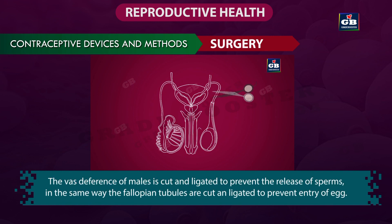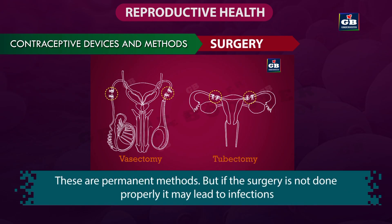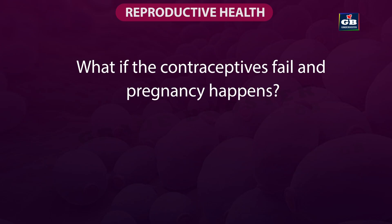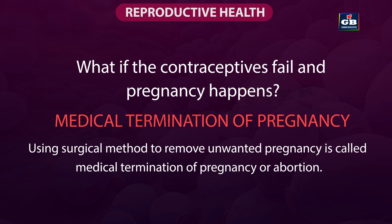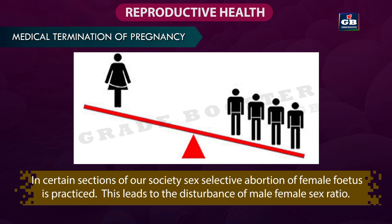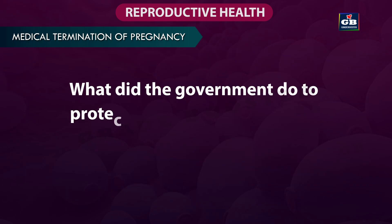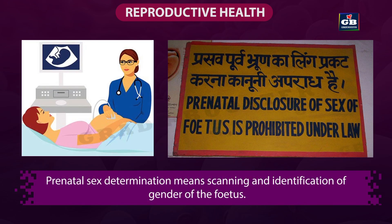Surgical methods: The vas deferens of males is cut and ligated to prevent the release of sperms. Similarly, the fallopian tubules of females are cut and ligated to prevent entry of eggs. These are permanent methods, but if the surgery is not done properly, it may lead to infections. If contraceptives fail and pregnancy happens, medical termination of pregnancy — using surgical methods to remove unwanted pregnancy, also called abortion — can be used. In certain sections of society, sex-selective abortion of female fetuses is practiced, which disturbs the male-female sex ratio. The government has banned prenatal sex determination to control the misuse of medical termination of pregnancy. Prenatal sex determination means scanning and identification of the gender of the fetus.